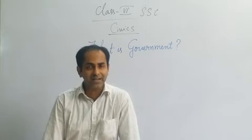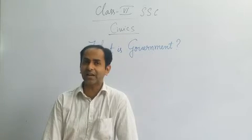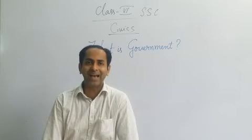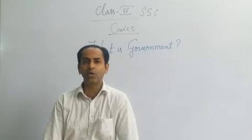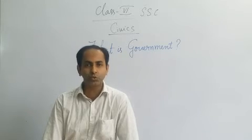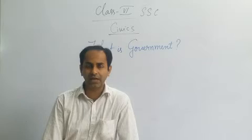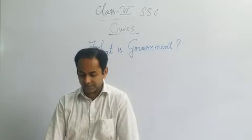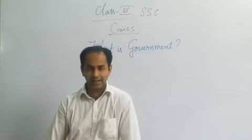So what is universal adult franchise? This means that when you attend the age 18, that means you are becoming an adult, at that time you are getting the right to vote. That means you can choose your own leader and you can cast a vote.